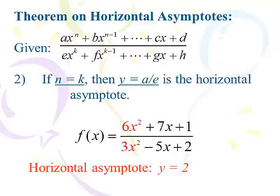Here's case number two. We have 6x squared and 3x squared — we have a tie. So x squared and x squared are going to go up together. When x is at a billion, the 7x, the minus 5x, the 1 and the 2 become insignificant. We only concentrate on the lead terms — we have a tie, so we go to the tiebreaker: 6 divided by 3 is 2. As x goes to infinity or negative infinity, this function will get closer and closer to the line y equal 2. That's case number two — the tiebreaker. Take the ratio of the coefficients of the lead terms.